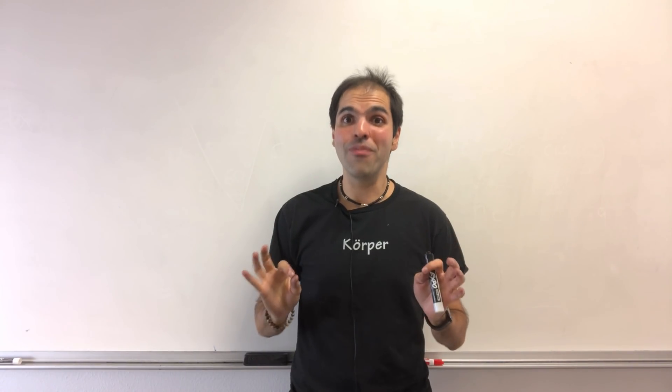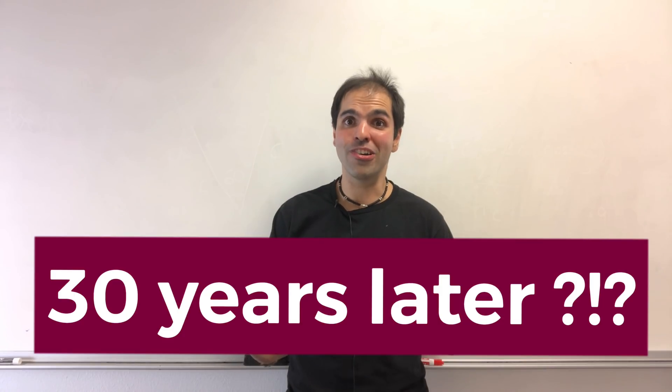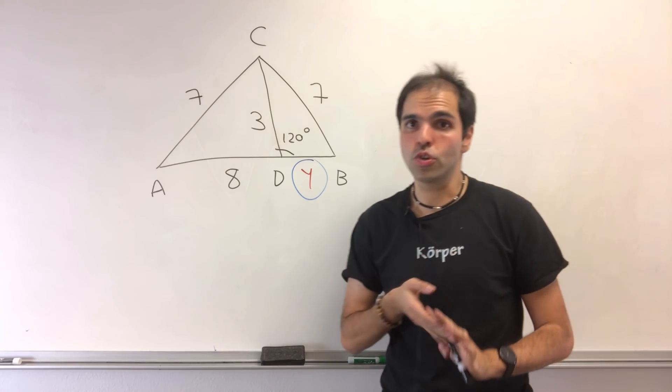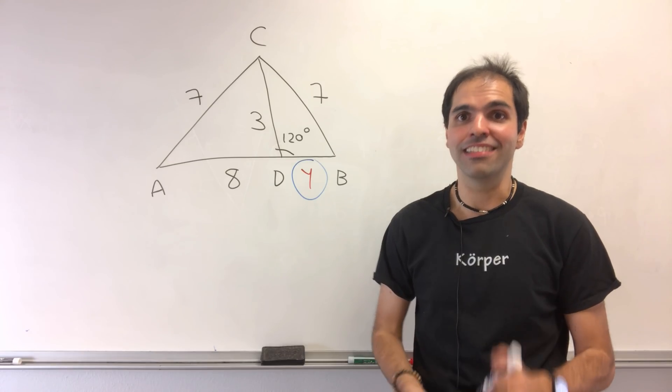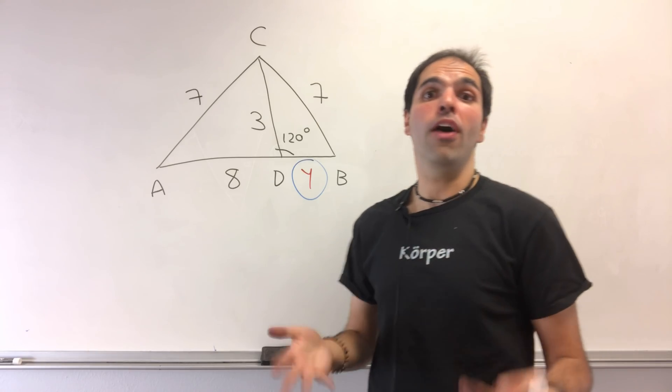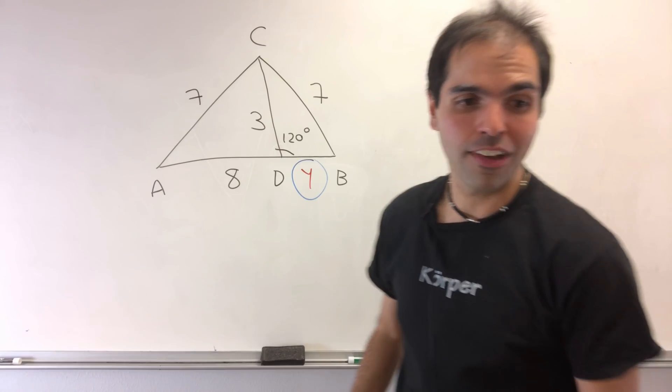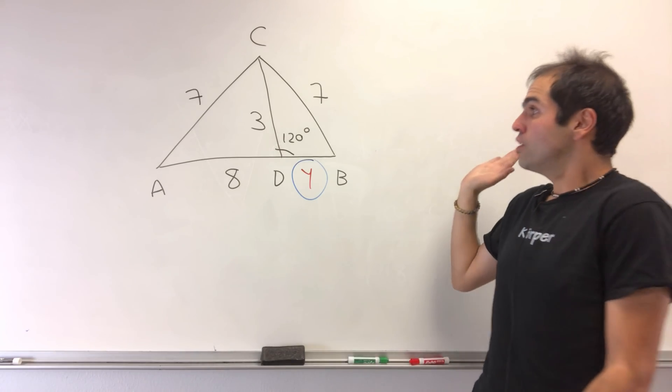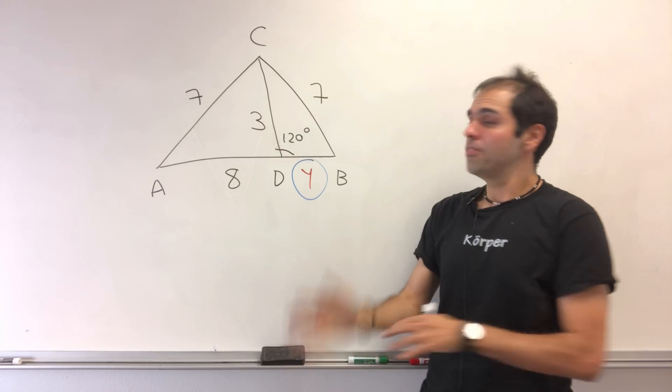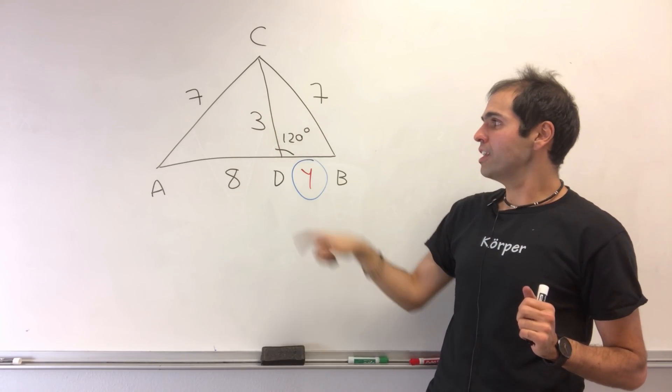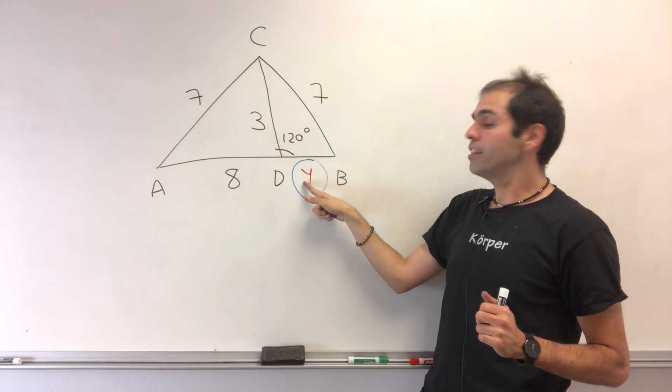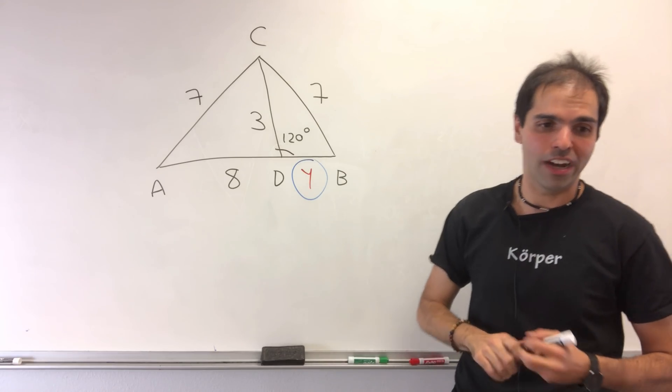Then something amazing happened 30 years later. Ian was grading for the Euclid math contest at the University of Waterloo, which is a 12th grade math competition. In 2009, a question appeared: Consider a triangle with angle 120 degrees. Find this side y of the triangle.